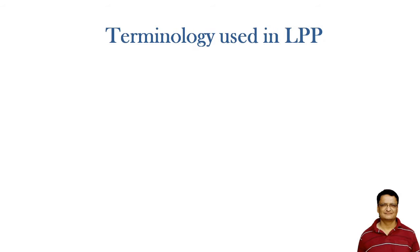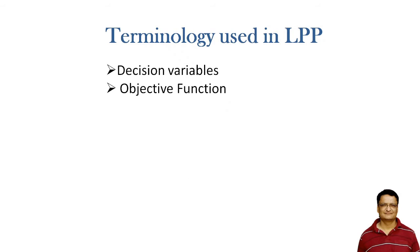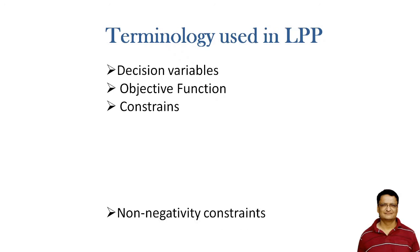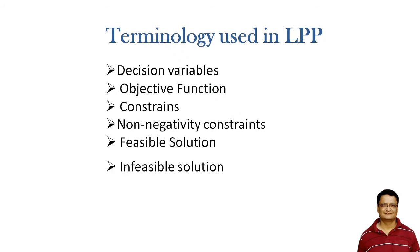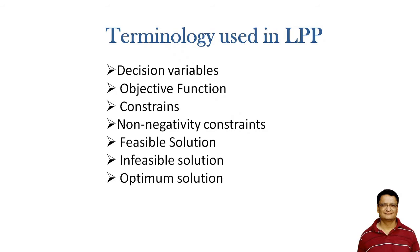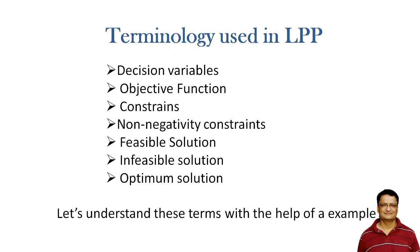Before we start with the actual problem, whenever we wish to solve any LPP problem we must know the following terminology: decision variables, objective function, constraint, non-negativity constraint, feasible solution, infeasible solution, and optimum solution. Let us understand these terms with the help of an example.